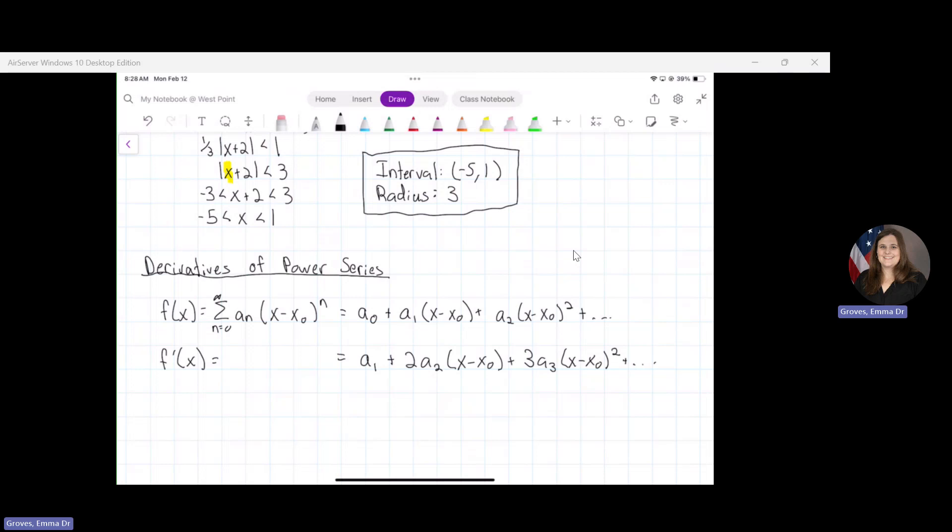So let's say I want to write out my sum. I'm going to leave my n equals blank for just a second because we're going to talk about that. But I basically have n times a_n times (x - x_0) to the (n - 1). I brought that n out front and then reduced the degree.